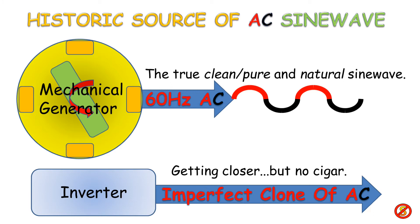That's where the 60 cycles coming out of the wall comes from — some Edison, or whatever your power company is, has these spinning things that create this nice smooth transition from no current up to maximum, down to none, back down to the other side — the negative. That's the natural sine wave, the pure sine wave, the clean sine wave. The inverters, on the other hand, take direct current and convert it into a simulation, or a clone, or an imperfect version of a sine wave. It's an imperfect — depending on how close you look — the better inverters make something that looks very, very close to a sine wave. But if you look at it close enough, you'll see some little tiny bumps in it.